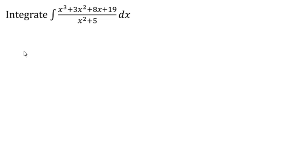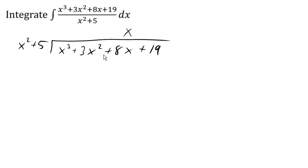So we're going to divide x squared plus 5 into x cubed plus 3x squared plus 8x plus 19. We need to ask ourselves, what times x squared gives me x cubed? And the answer is x. So distributing that, x times x squared is x cubed, x times 5 is 5x. Notice we're lining up like terms.